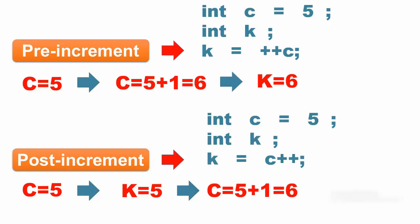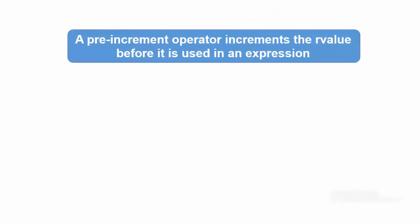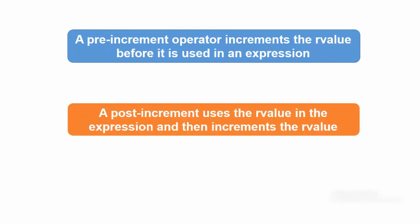The rule is simple, a pre-increment operator increments the R value before it is used in an expression whereas post-increment uses the R value in the expression and then increments the R value.